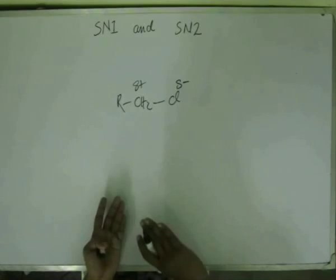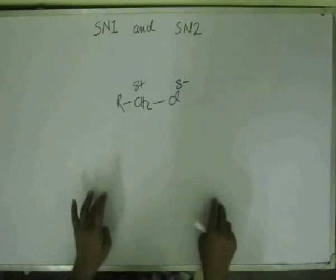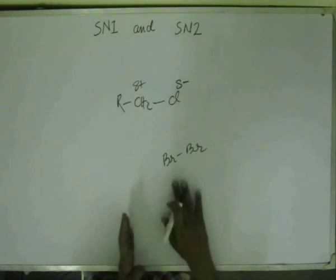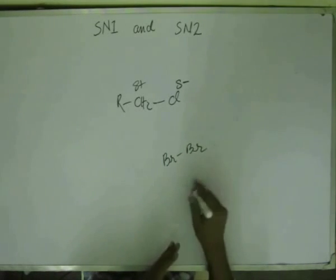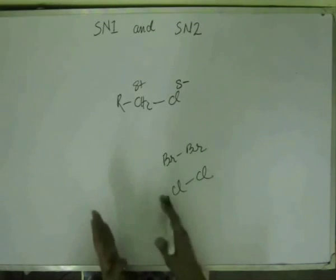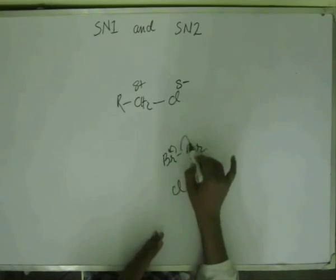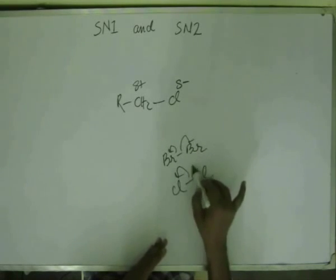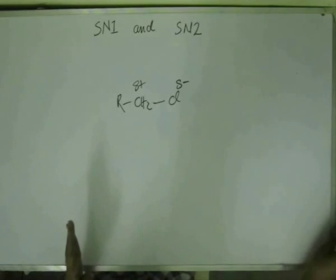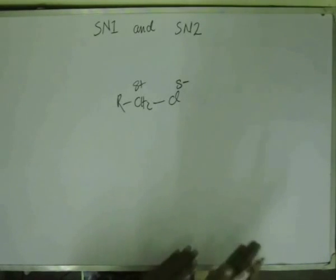If electrons go equally on both sides, that is called homolytic fission. Homolytic fission occurs mostly when we have the same electronegativity value — for instance, Br-Br or Cl-Cl. One electron goes to each atom. When we have a difference in electronegativity value, then mostly we have heterolytic fission.